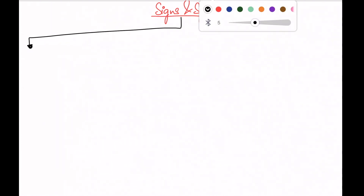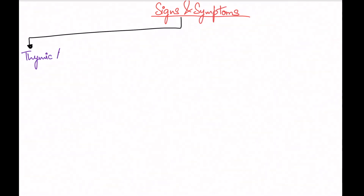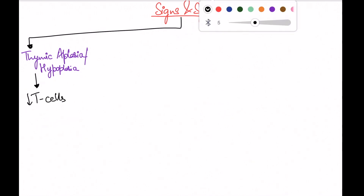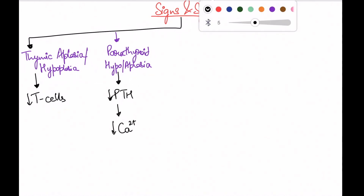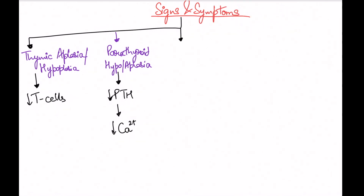In DiGeorge syndrome, we have thymic hypoplasia or aplasia — meaning decreased or absent thymus gland development. Because of that, it leads to decreased T-cells, and eventually recurrent infections. The second feature is underdevelopment of the parathyroid gland — parathyroid hypoplasia or aplasia — resulting in decreased parathyroid hormone and therefore decreased calcium in our body.